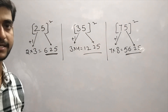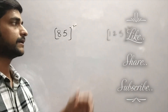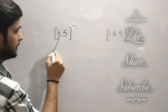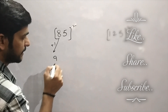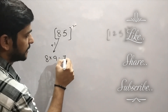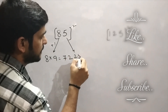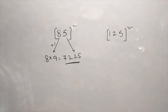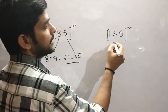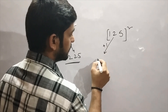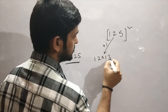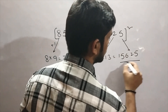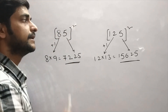We will consider some other numbers as well. Let's take 85 and 125, doing the same process. Consider 8, increase by 1 — here you are getting 9. 8 x 9 gives 72. And 5 squared will be 25. So 7225 is the answer for 85 squared. The next number is 125. Take this 12, increasing by 1 — that is 13. 12 x 13 gives 156. And 5 squared will be 25. So 15625 is the answer for 125 squared.